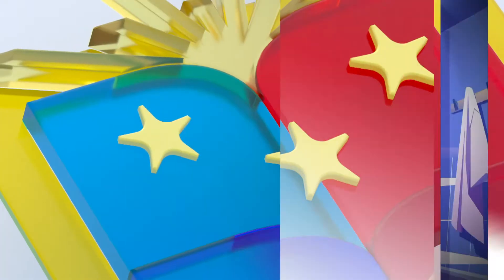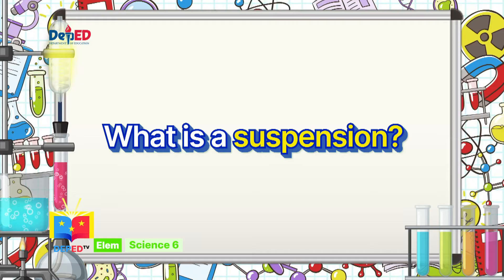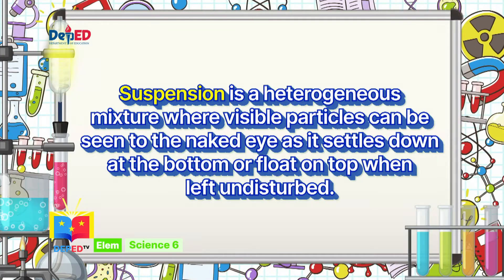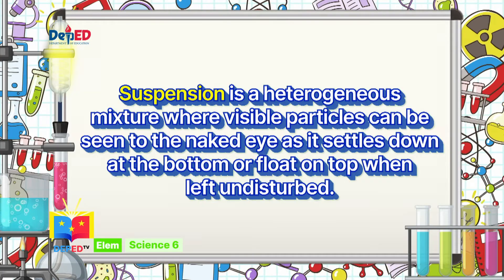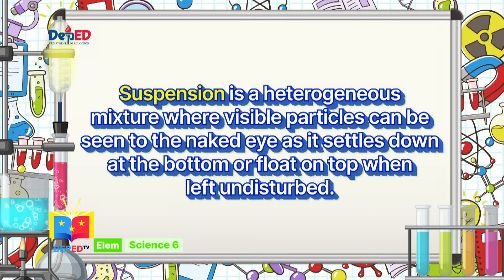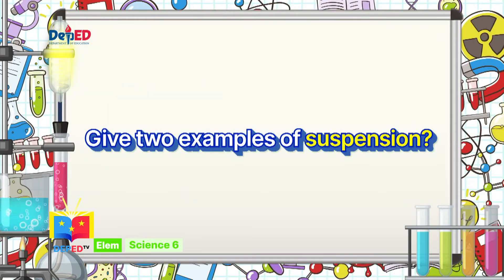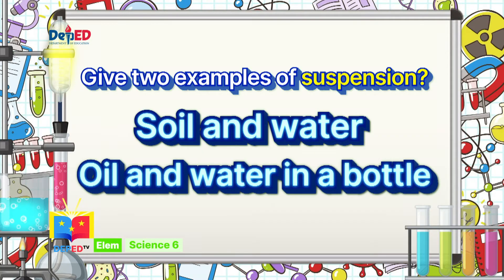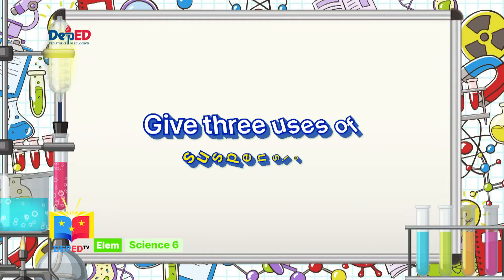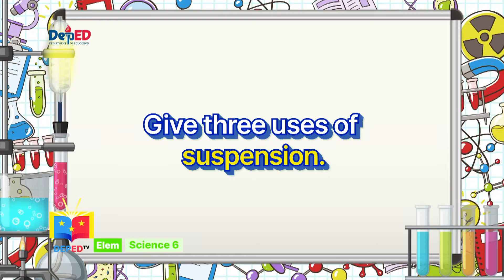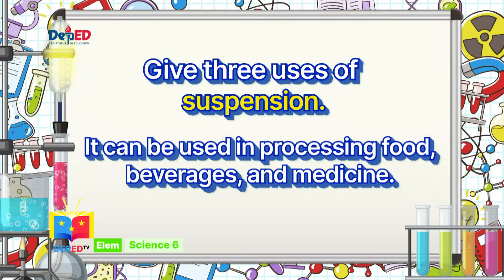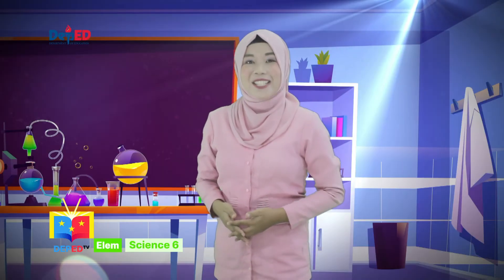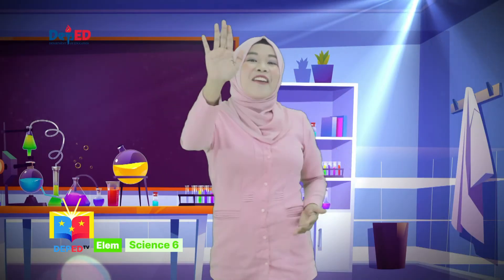Write: Suspension is a heterogeneous mixture where visible particles can be seen to the naked eye as it settles down at the bottom or floats on top when left undisturbed. Number two: give two examples of suspension — soil and water in a clear glass, and oil and water in a bottle. Number three: give three uses of suspension — it can be used in processing food, beverages, and medicine. Give me a high five, Science-Minded Learners, for a job well done! Again, high five!